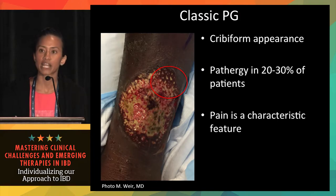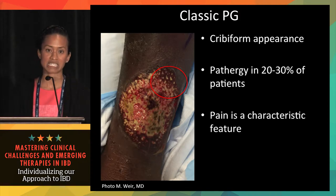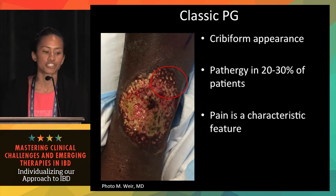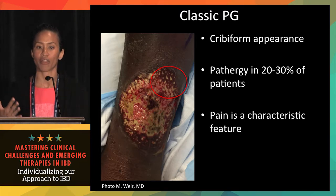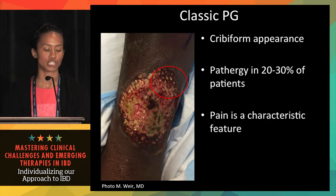The classic ulcerative type often starts as a tender pustular nodule that rapidly expands to a well-demarcated ulcer with a violaceous edge — you can see the erythema at the wound edge in the circled photo. It most frequently occurs on the lower extremities. A characteristic feature is the cribriform appearance at the periphery of the wound — that Swiss cheese look. Pathergy occurs in 20 to 30% of patients, and pain is characteristic, with patients saying even air on the wound is exquisitely painful.